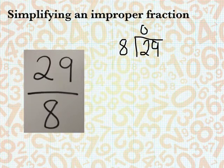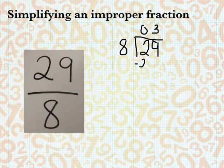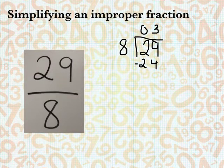And we know 8 cannot go into 2. 8 can go into 29 three times because I know 8 times 3 is 24. So we subtract it off and we have 5.